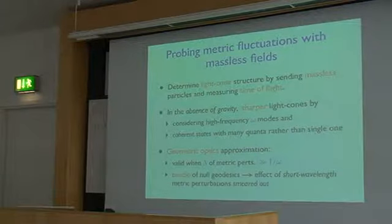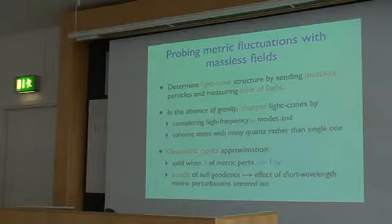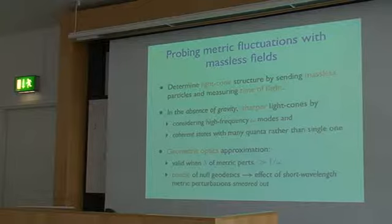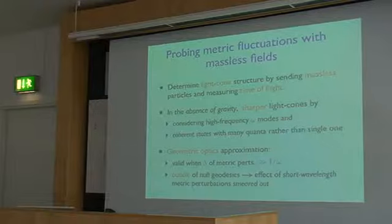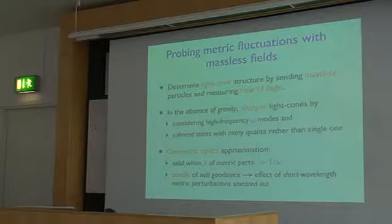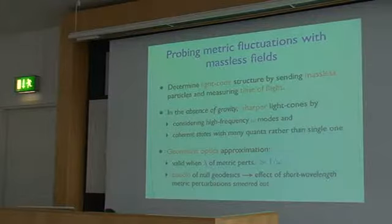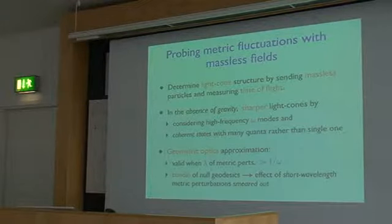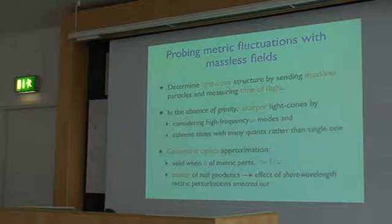How do we probe metric fluctuations with massless fields? We want to determine the light-cone structure by sending massless particles and measuring the time of flight. In the absence of gravity, the way to obtain sharper light cones is by considering high frequency modes — so you have less diffraction — and also by considering coherent states with many quanta, essentially classical electromagnetic waves rather than single photons, so you have a very sharp peak over the vacuum fluctuations.